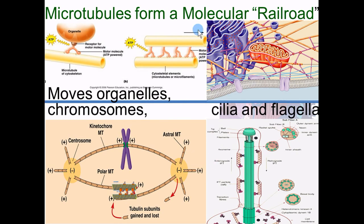Microtubules form a molecular railroad. If you want to transport a vesicle — a membrane-bound little pocket or trunk — around the cell, you stick it on a structure called dynein. This dynein walks down the microtubules, with one foot crossing over and planting itself, then the other foot crossing over — they actually look like little guys walking along the tube. They can carry organelles, move vesicles, carry chromosome parts, and contribute to ripping the cell in half.